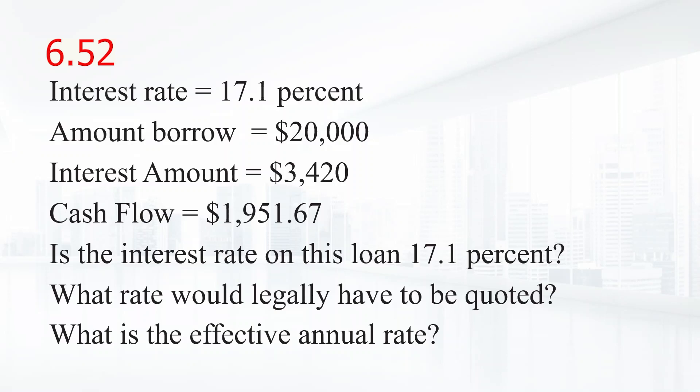Over the next 12 months, if the interest rate on this loan is 17.1 percent, what rate would you legally have to be quoted? What is the effective annual rate? To find the annual percentage rate or effective annual rate, we need to use the actual cash flows of the loan. The interest rate quoted in this problem is only relevant to determine the total interest. The interest rate for the cash flows of the loan uses the present value annuity formula: PV equals cash flow times one over r minus one over r times (one plus r) raised to the power n.